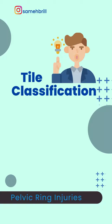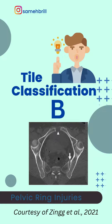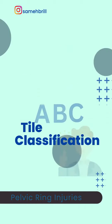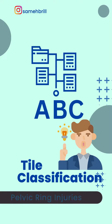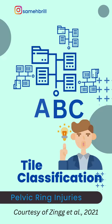Tile classification is super easy. There are three types: Type A, Type B, and Type C. Type A is a stable pelvis. Type B is a rotationally unstable, vertically stable pelvis. And Type C is both rotationally and vertically unstable. Each of Tile A, B, and C are subclassified into 1, 2, and 3, which are further subclassified, but we don't need them for catching the basics.